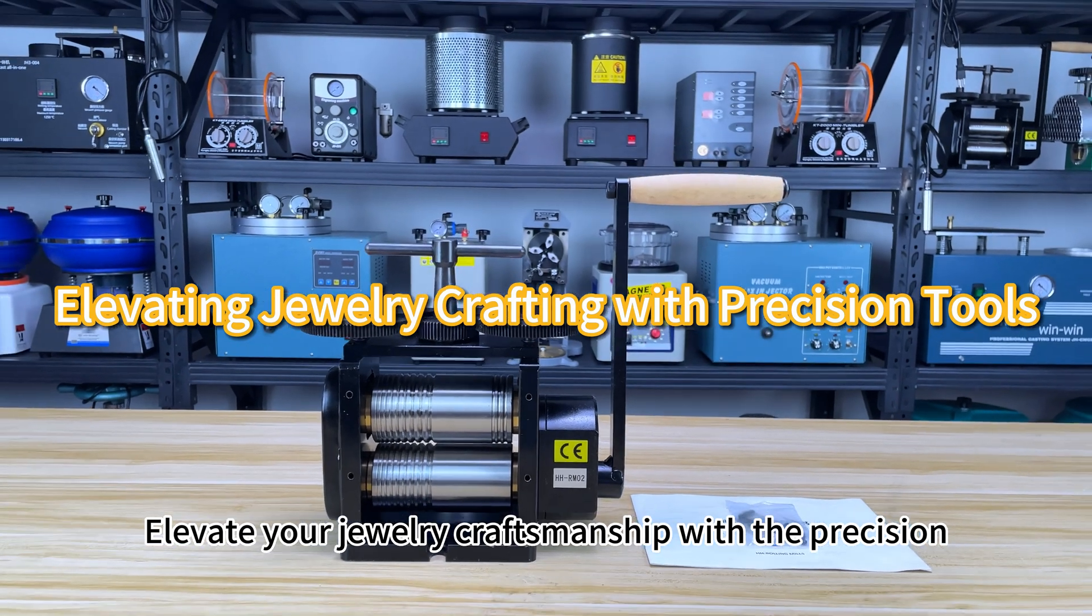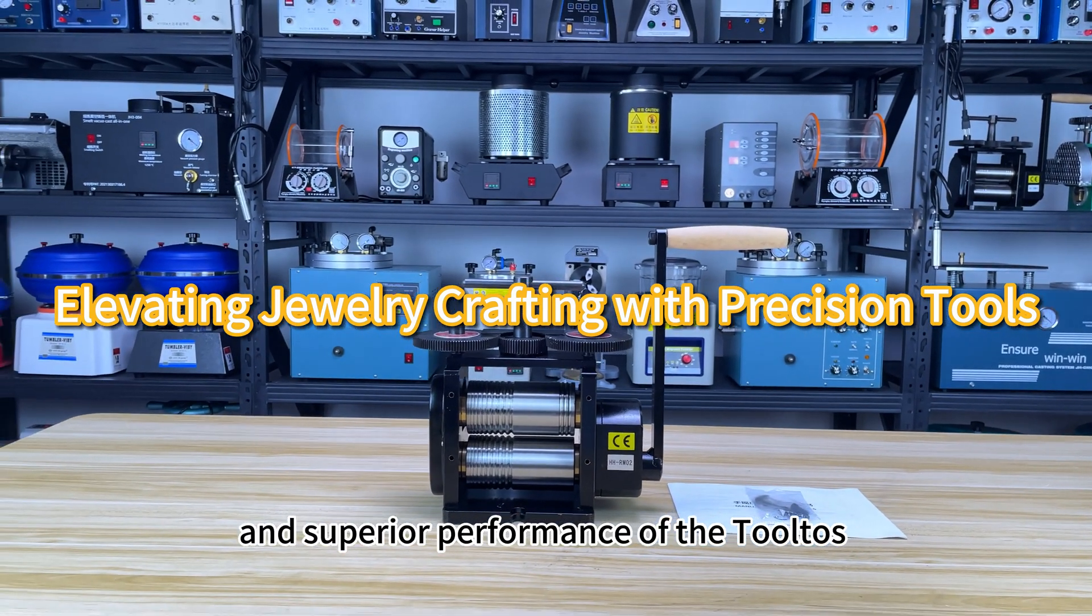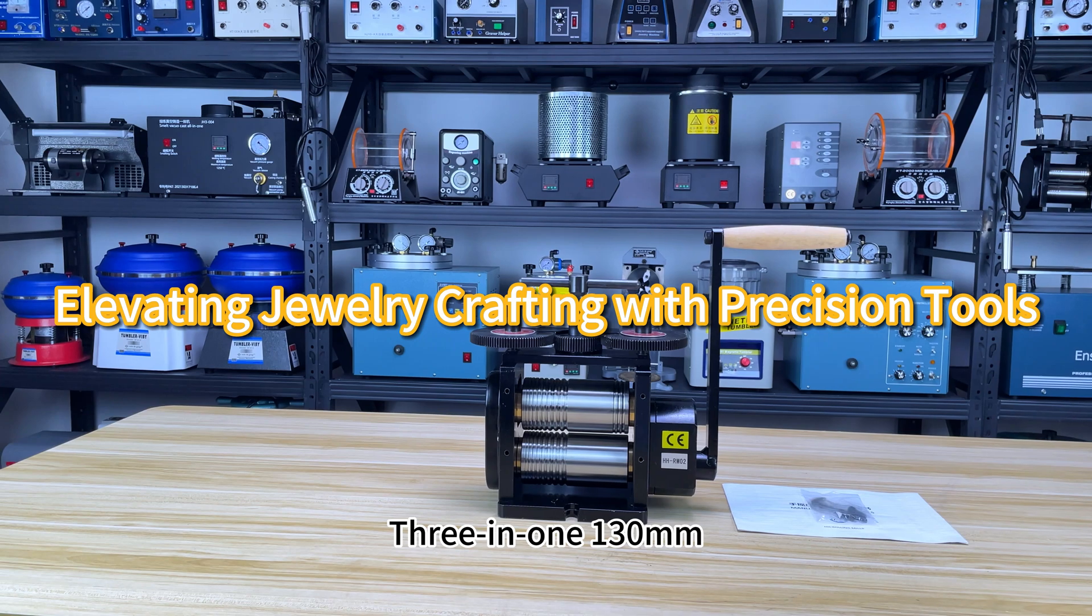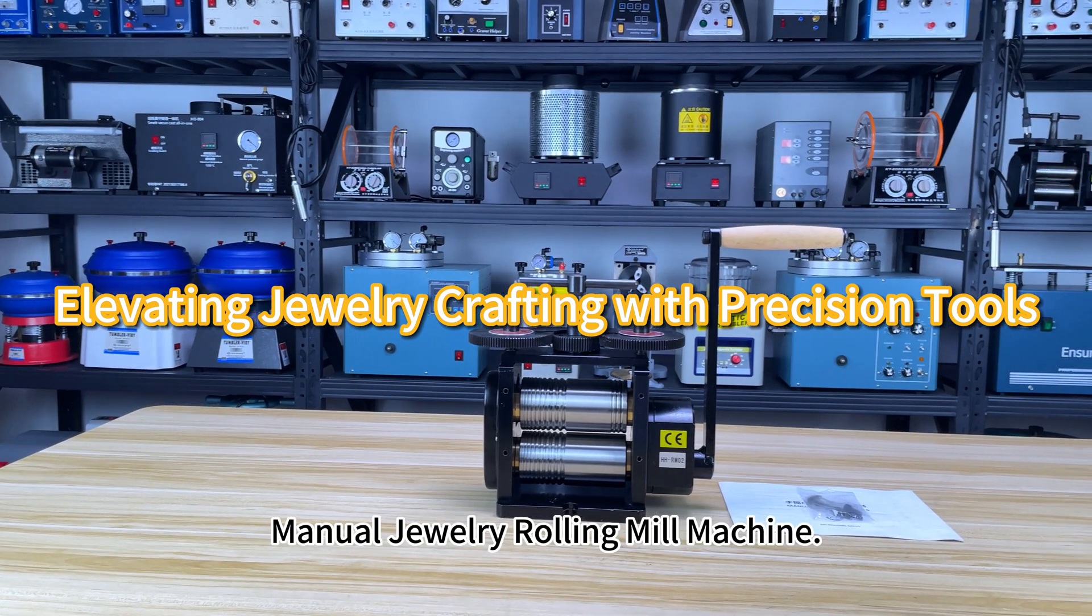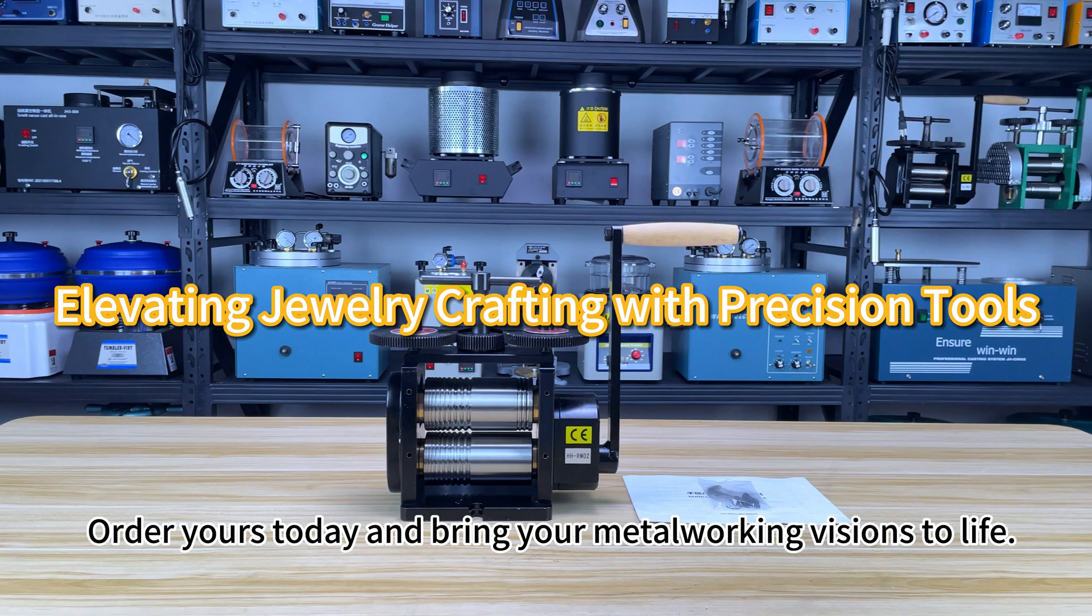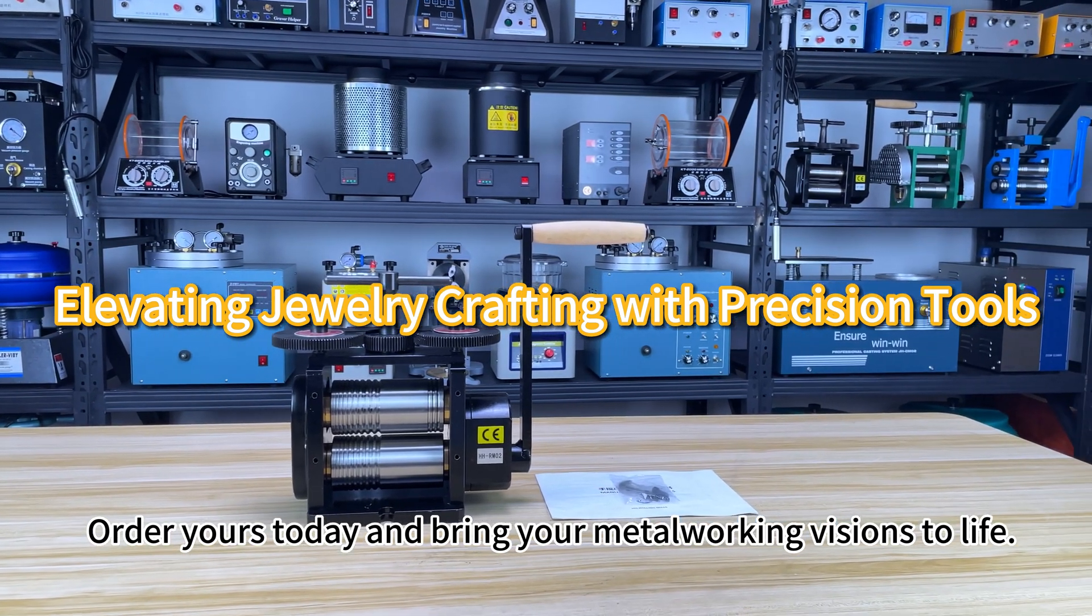Elevate your jewelry craftsmanship with the precision and superior performance of the Tolto's 3-in-1 130mm manual jewelry rolling mill machine. Order yours today, and bring your metalworking visions to life.